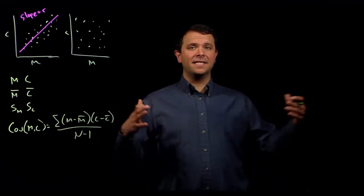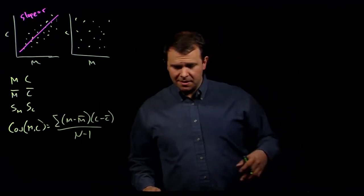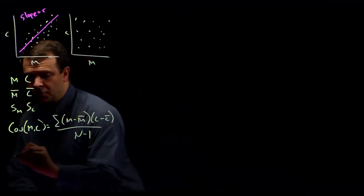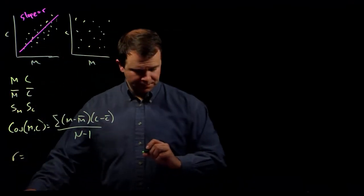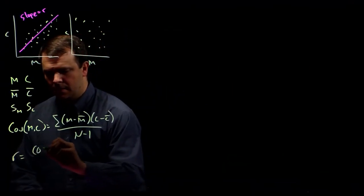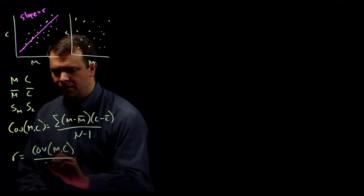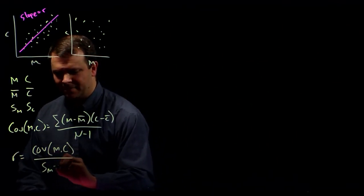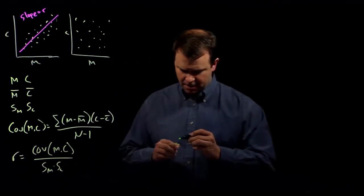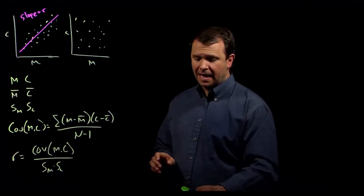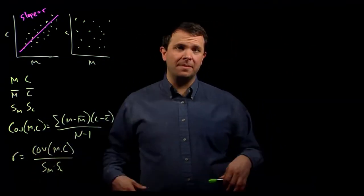And now that we've got this covariance computed, we can go ahead and compute the correlation coefficient as the covariance of M and C over SM times SC. And so, now that we've got this measurement R, what does that have to do with narrow sense heritability?